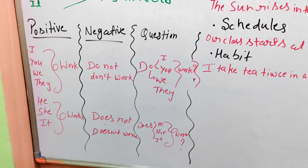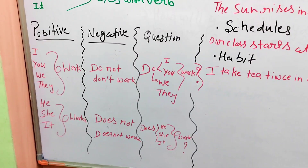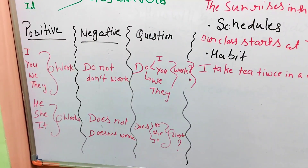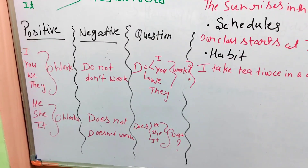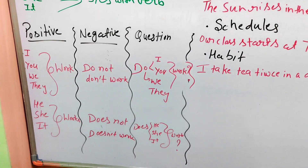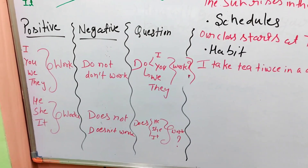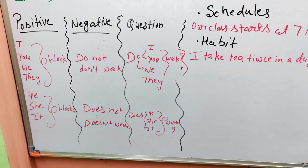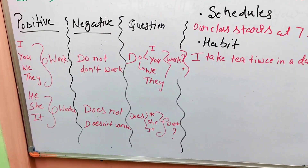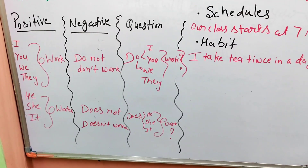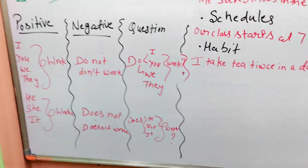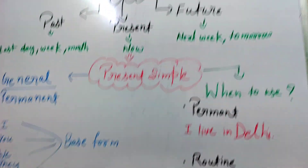With he, she, it — for positive sentences use 's' on the verb. For negative, use 'does not': he does not work, it does not work. And to make a question, use 'do' for plural subjects and 'does' for he, she, it.